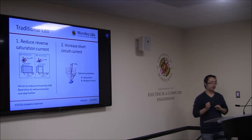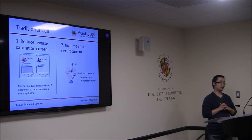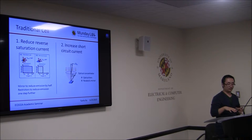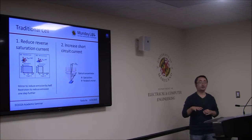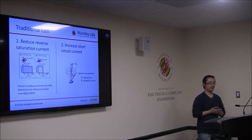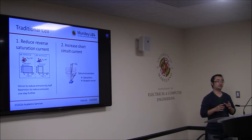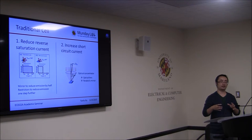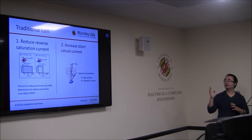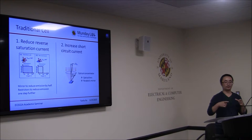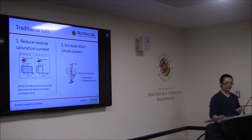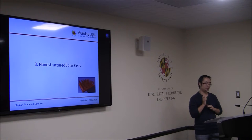The traditional way to do that is: first, reduce the reverse saturation current. A standard cell emits over all space; if you put a mirror on the back, the emission is halved; if you put nanostructures on top, you can reduce it further. The second way to increase short-circuit current is using optical concentrators — devices that use an optical lens to focus light from a large spot onto a tiny solar cell area, or a parabolic mirror with the same effect. Another way is to use nanostructure solar cells to boost efficiency.